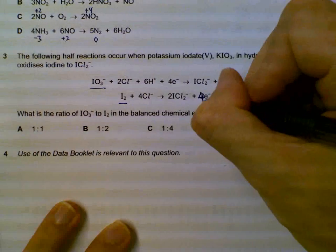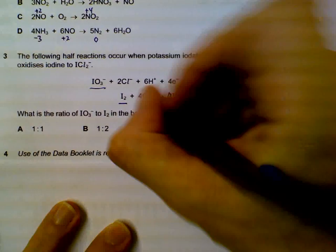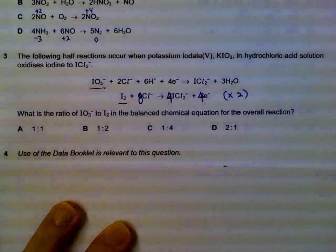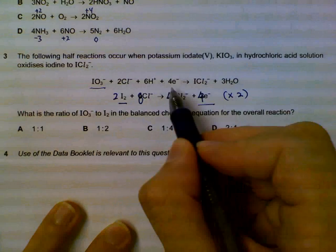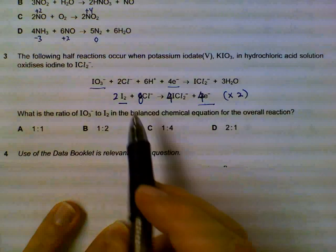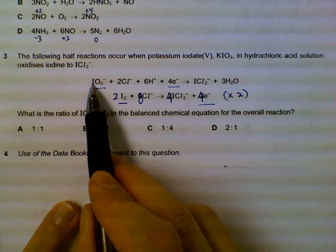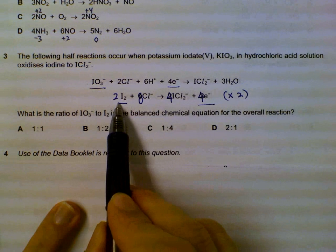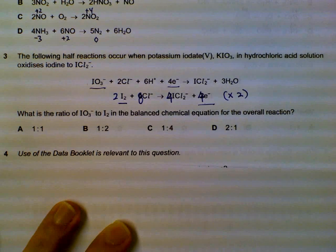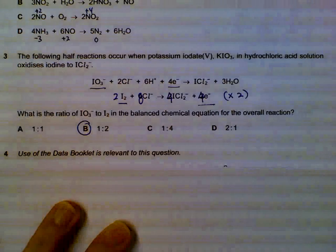We have to multiply the bottom equation throughout by two. So makes it four, four, eight and importantly the other species of iodine is two. Now we have both electrons to be the same number. We can actually combine them together or we can compare. One more will react with two more of I2. So that's the ratio that they will react.